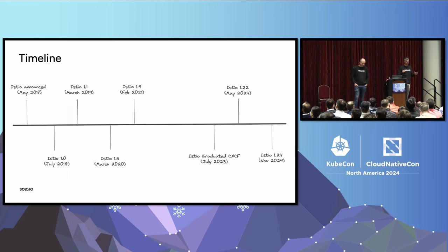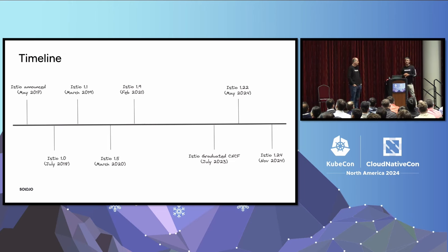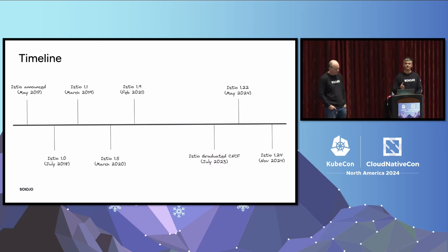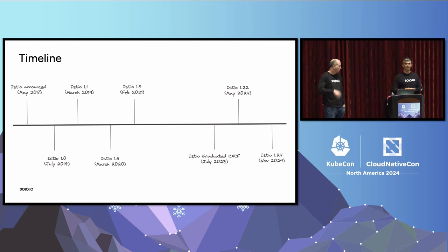Just for a little context, this is what the seven years look like. The project was initially released in May of 2017. About a year later, with a lot of fanfare, a lot of excitement, and a lot of promise, was Istio 1.0 in July 2018. We tried to follow with 1.1 quickly, but it took about nine months. From there we saw some architectural changes — 1.5 and 1.6 were milestones, 1.9 was a milestone. Fast forward to the CNCF donation, and more recently, the last two and a half years, the introduction of the sidecarless data plane.